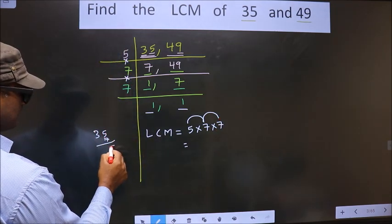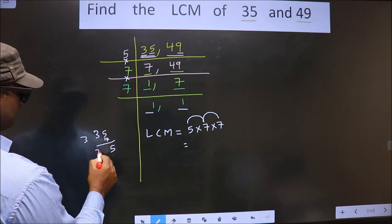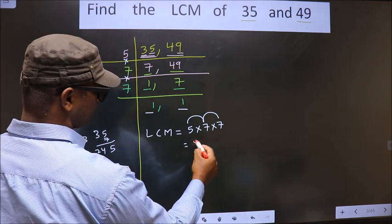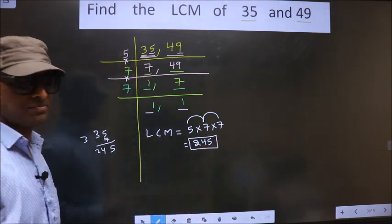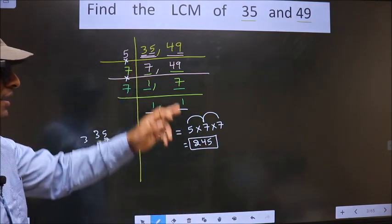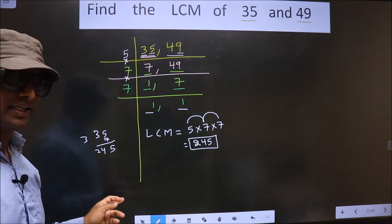7 times 5 is 35, 7 times 3 is 21. We get 245. This is our LCM. Am I clear?